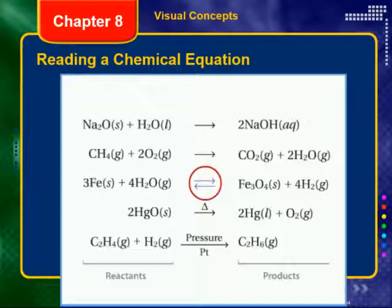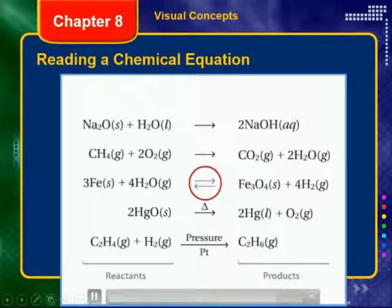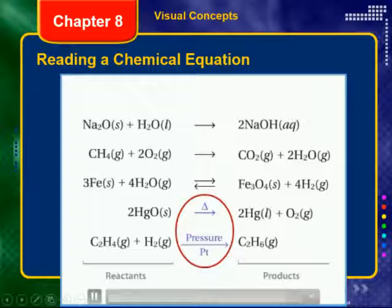If arrows point in both directions, the reaction is reversible — the products can undergo another reaction that turns them back into the starting materials. If something is required to make the reaction progress, such as heat, pressure, or a catalyst, it is shown over or under the arrow.